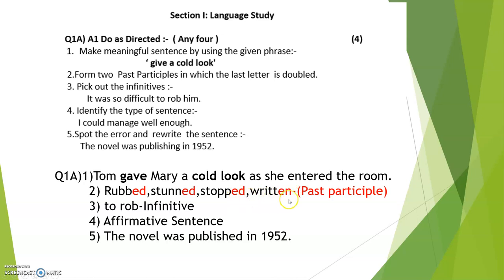Now pick up the infinitives. When I was looking at some of your papers, I noticed that some of you are only writing 'to' — you will not get it right. You have to write 'to' and the verb next to it. In infinitives, the verb beside 'to' must also be written. So whenever you pick out the infinitive it will be 'to' plus the verb next to it. For example: 'It was so difficult to rob him' — so 'to rob' is the infinitive. Remember, along with 'to' you must also write the verb.